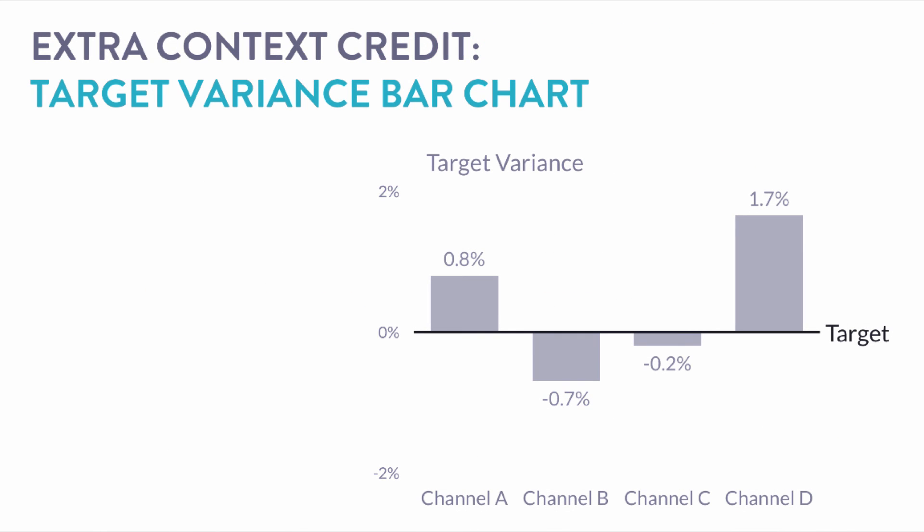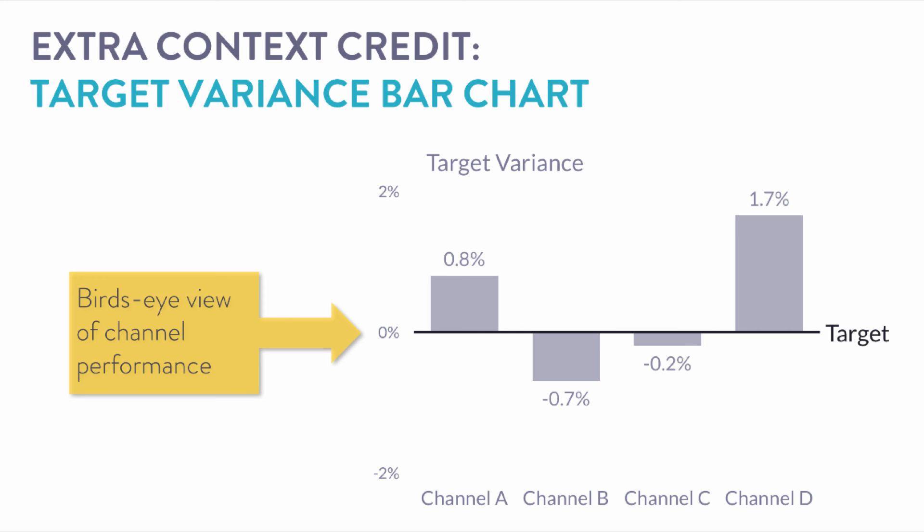Here is the target variance bar chart — very simple. The target line for all four channels has been normalized to zero, and the variance each channel is experiencing shows above or below. This is just fantastic for getting a read on the pulse of how each channel is doing — something that will be missed by that larger, much more detailed view.